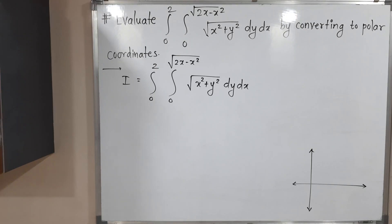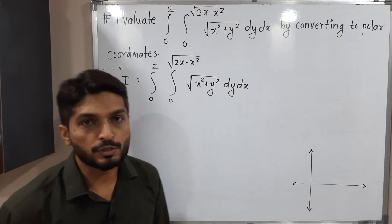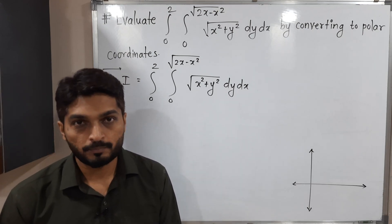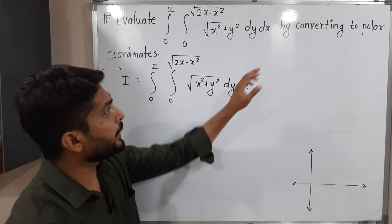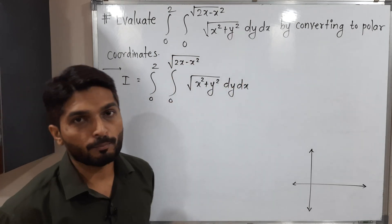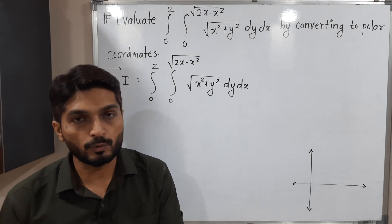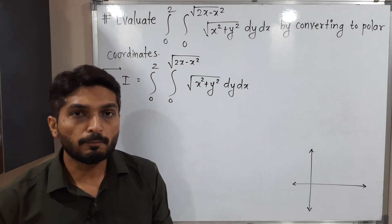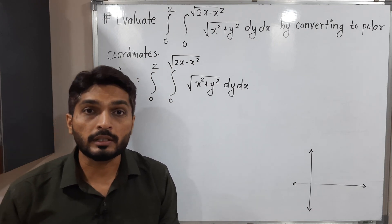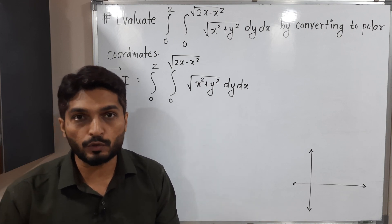In this video we are going to discuss this example. We have a double integration and we have to find its value by converting it to polar form. We have to convert the problem in polar coordinates and then solve it. The most important thing is the region of integration, so let us find that first.